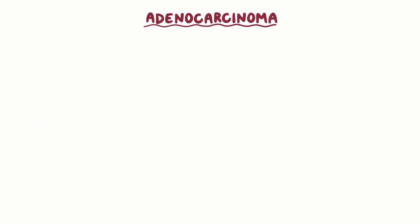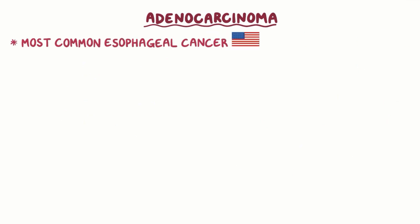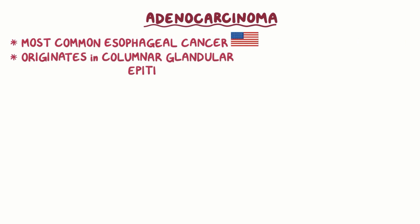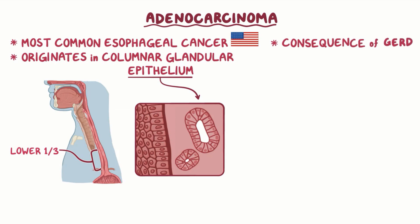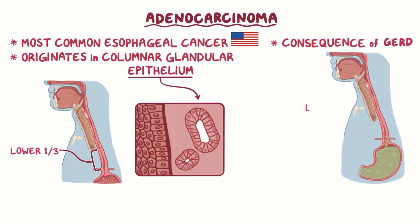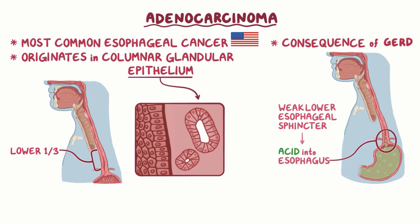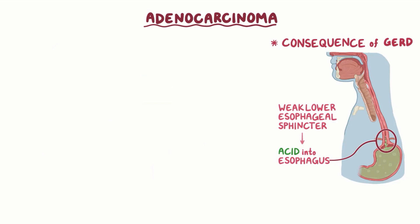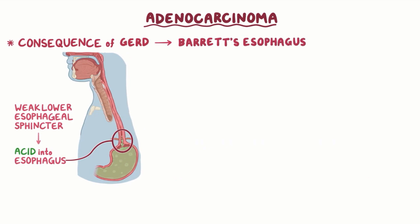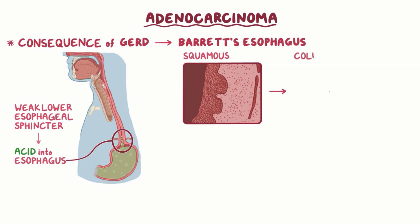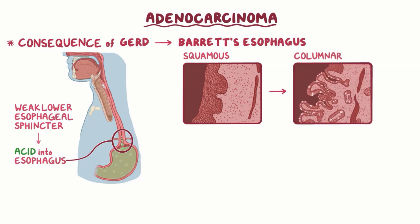Adenocarcinoma is the most common type of esophageal cancer in the United States, and it originates in the columnar glandular epithelium, most often in the lower third of the esophagus. Most frequently, adenocarcinoma develops as a consequence of gastroesophageal reflux disease, or GERD. With GERD, the lower esophageal sphincter is weaker than normal, and it allows acid from the stomach to go back up into the esophagus after meals. The presence of acid in the esophagus can lead to Barrett's esophagus, which is when the squamous epithelium is replaced by a columnar epithelium similar to that of the intestines, better adapted to withstand the acidity. This process is called intestinal metaplasia.